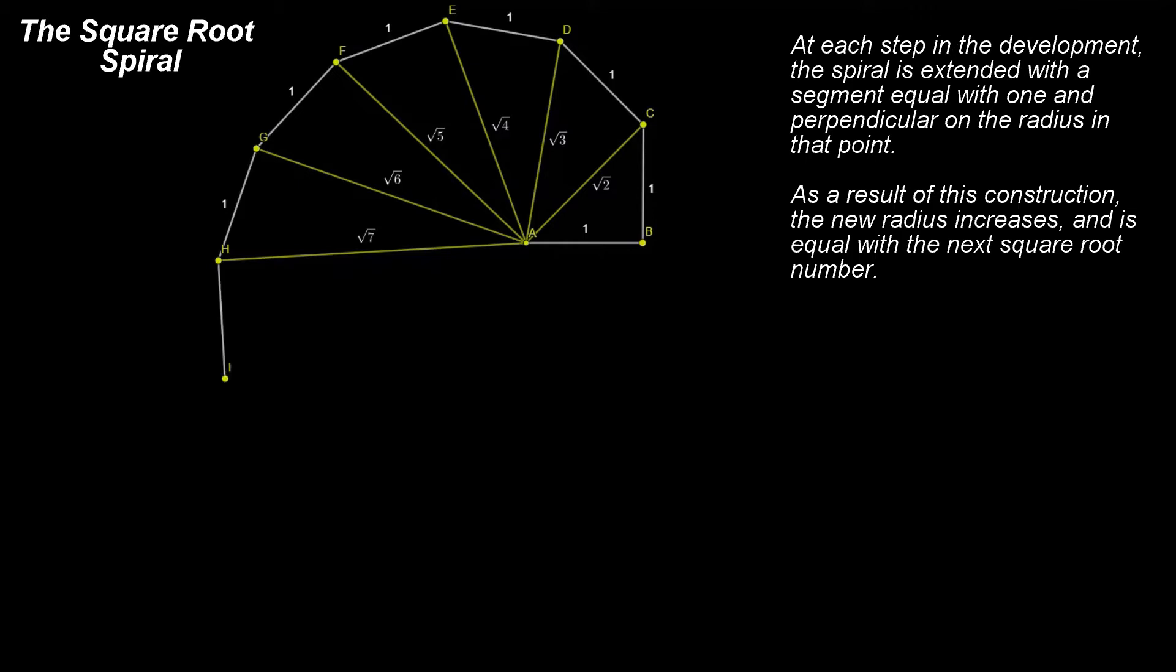What Theodorus has discovered is that the square roots of numbers that are not perfect squares are incommensurable between themselves. The square root of a perfect square number is always an integer.